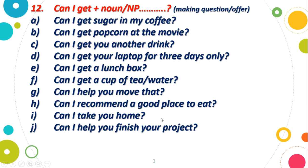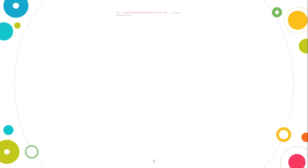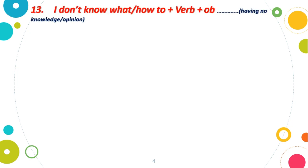Structure number 13: I don't know what to or I don't know how to. We use this to express having no knowledge or having no opinion about something.